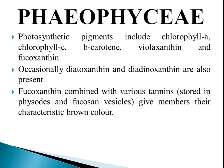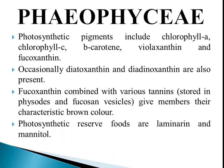Fucoxanthin, combined with various tannins, gives the members their characteristic brown color. After photosynthesis, carbohydrates are stored in the form of laminarin or mannitol as reserve food; starch is not found in this group.